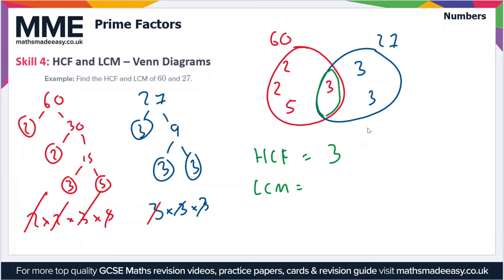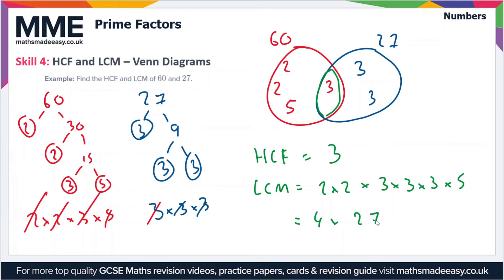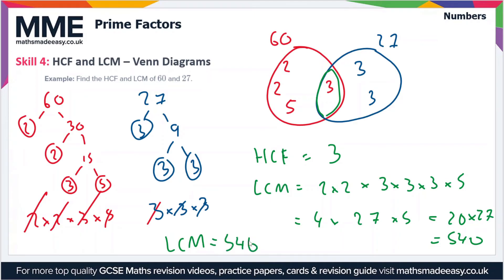To find the lowest common multiple, we multiply all of the numbers in the Venn diagram together: that's 2 times 2 times 3 times 3 times 3 times 5. We can work this out: 2 times 2 is 4, times 3 times 3 times 3 is 27, times 5. So 4 times 5 is 20, times 27 gives us 540. The lowest common multiple is 540.